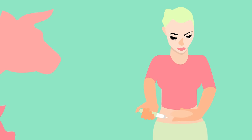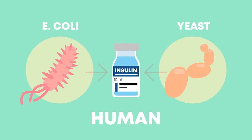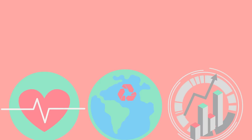Many years ago, diabetics who needed insulin to survive had to inject cow or pig insulin into their bodies. This was not ideal for many reasons. Today the insulin that diabetics inject is human insulin, and it is produced by microorganisms such as the E. coli bacterium and certain strains of yeast. Scientists are able to turn certain microorganisms into mini factories that make useful substances that improve our health, the environment and the economy.